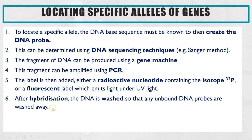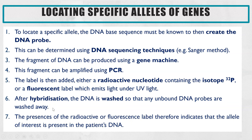You would then be able to detect the presence of the radioactive isotope using X-rays, or you could use UV light to see if you get fluorescence from the presence of a fluorescent label. That is how you can identify if the patient does have that allele of interest.